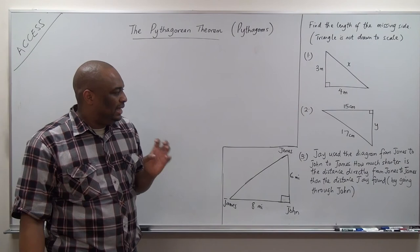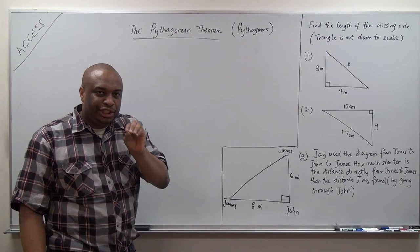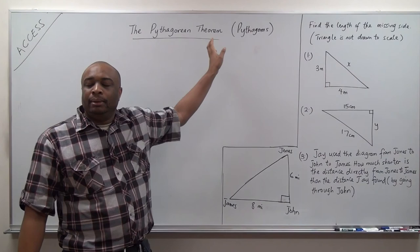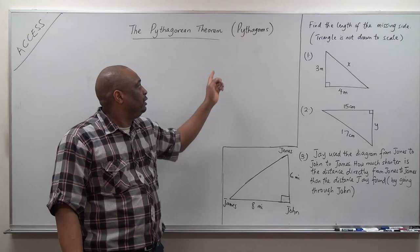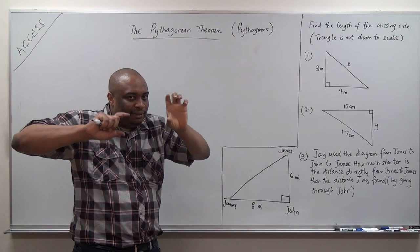How much shorter is the direct distance? Remember: Montgomery to Mobile was three steps, Mobile to Birmingham was four steps — seven steps total. But straight Montgomery to Birmingham was five steps, saving two steps. So the question is: how much distance did you save going directly from Jones to James versus Jones to John to James?